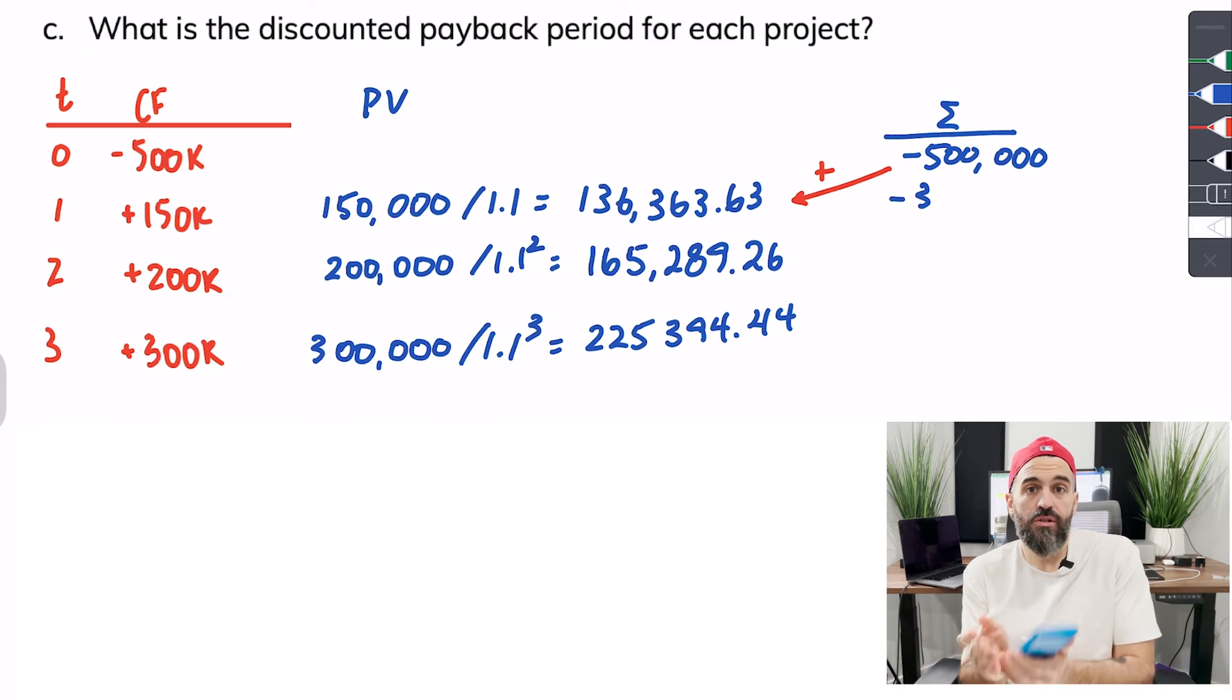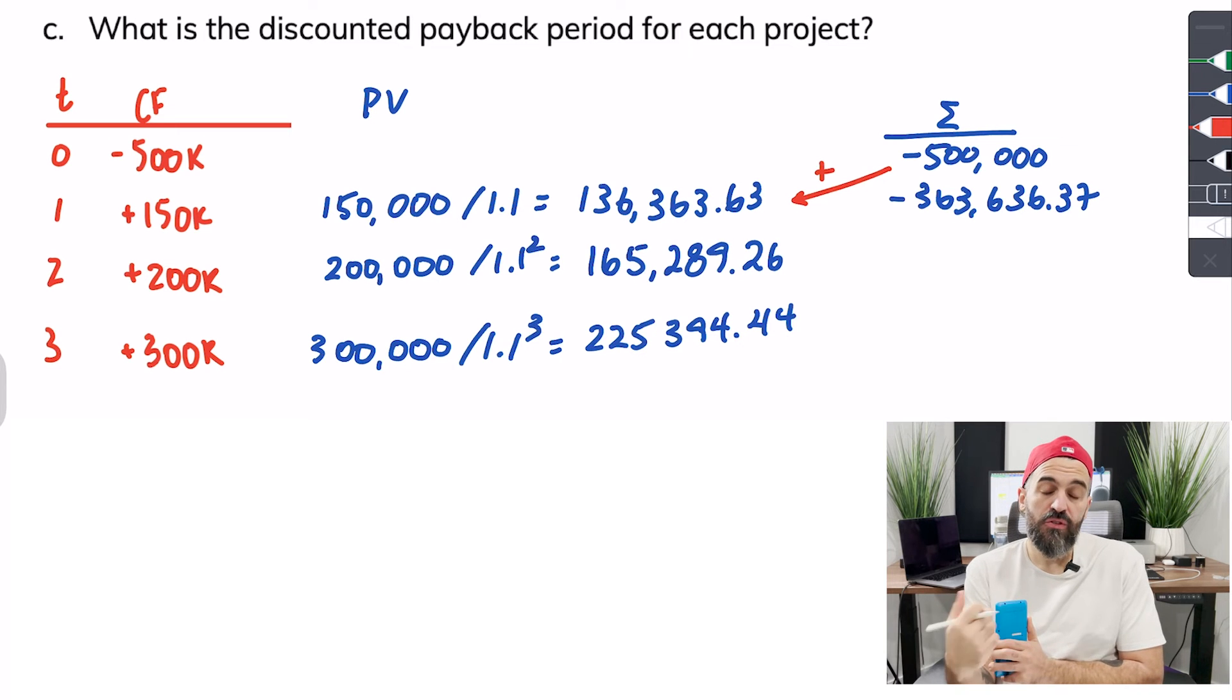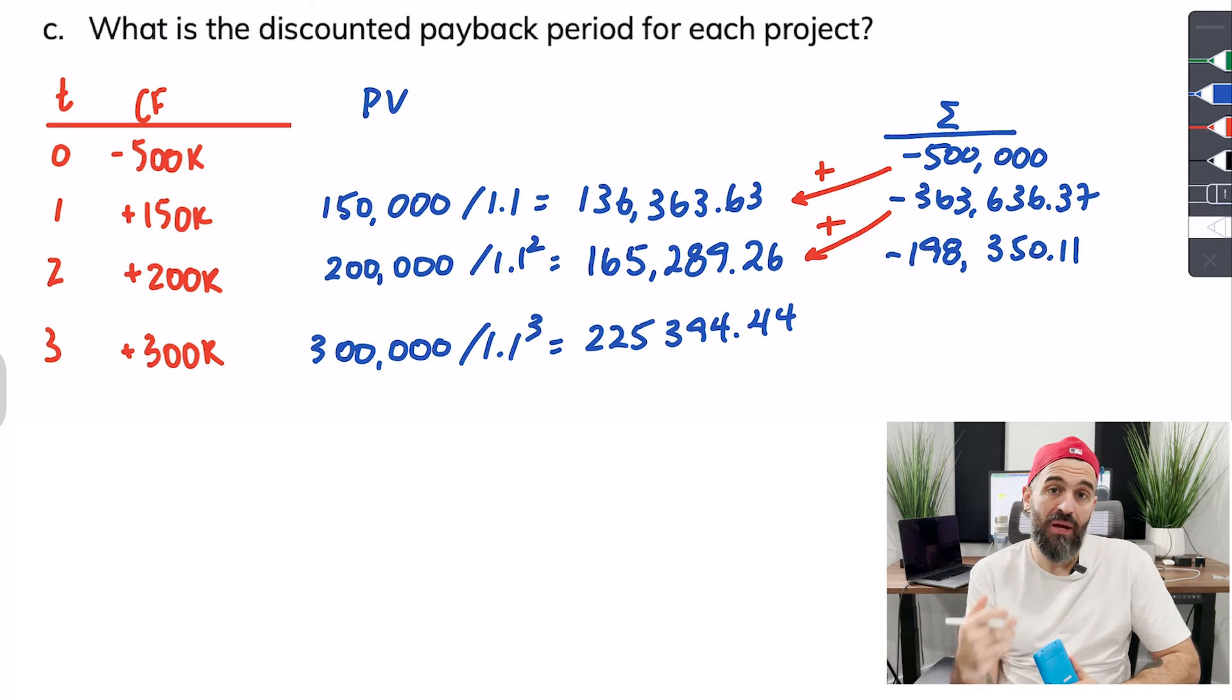So at this point you can see that after two years we're still negative $198,350 but the following year's cash flow has a present value of $225,394 which means it'll be enough to bring us back to zero and beyond.